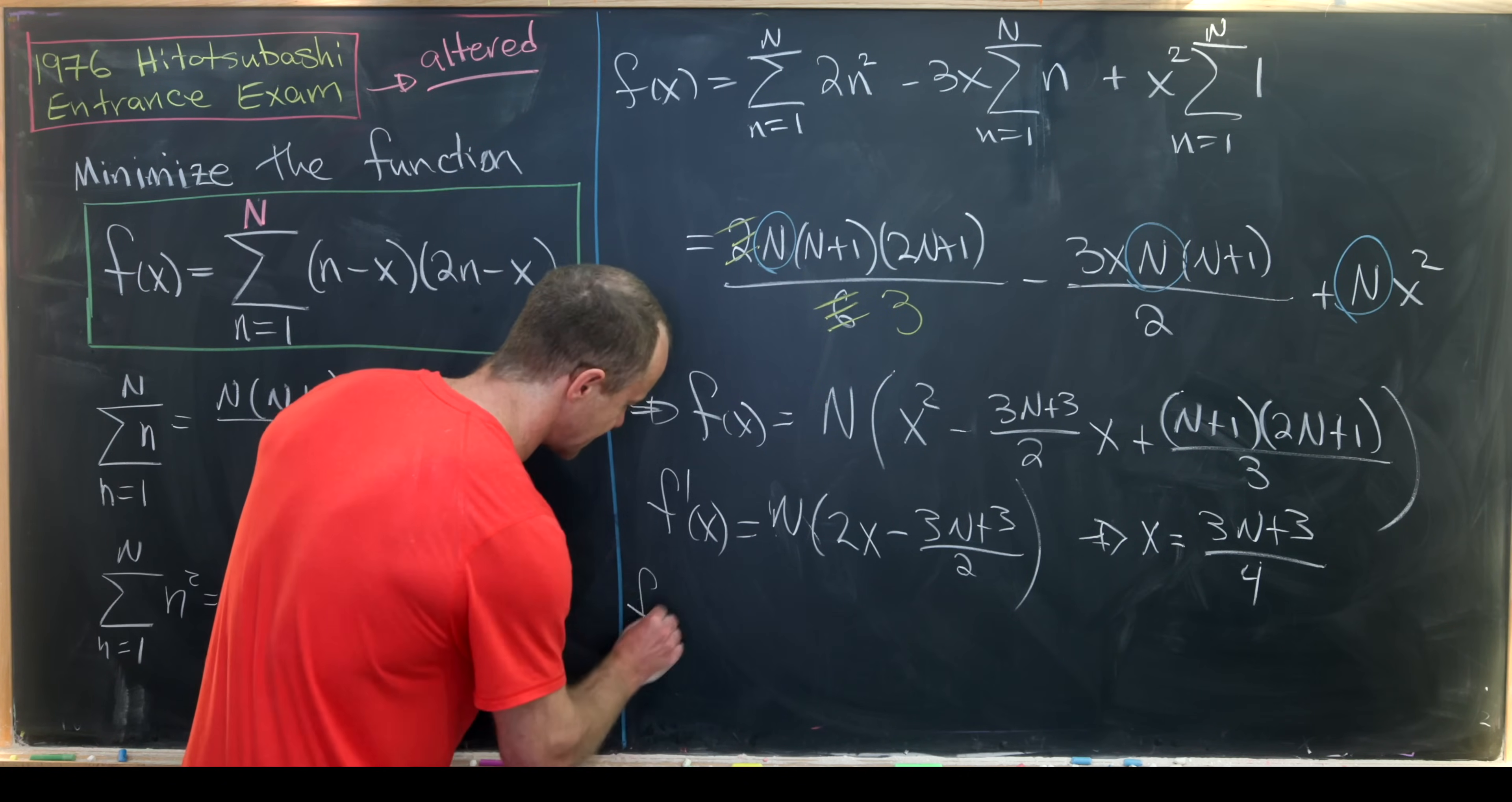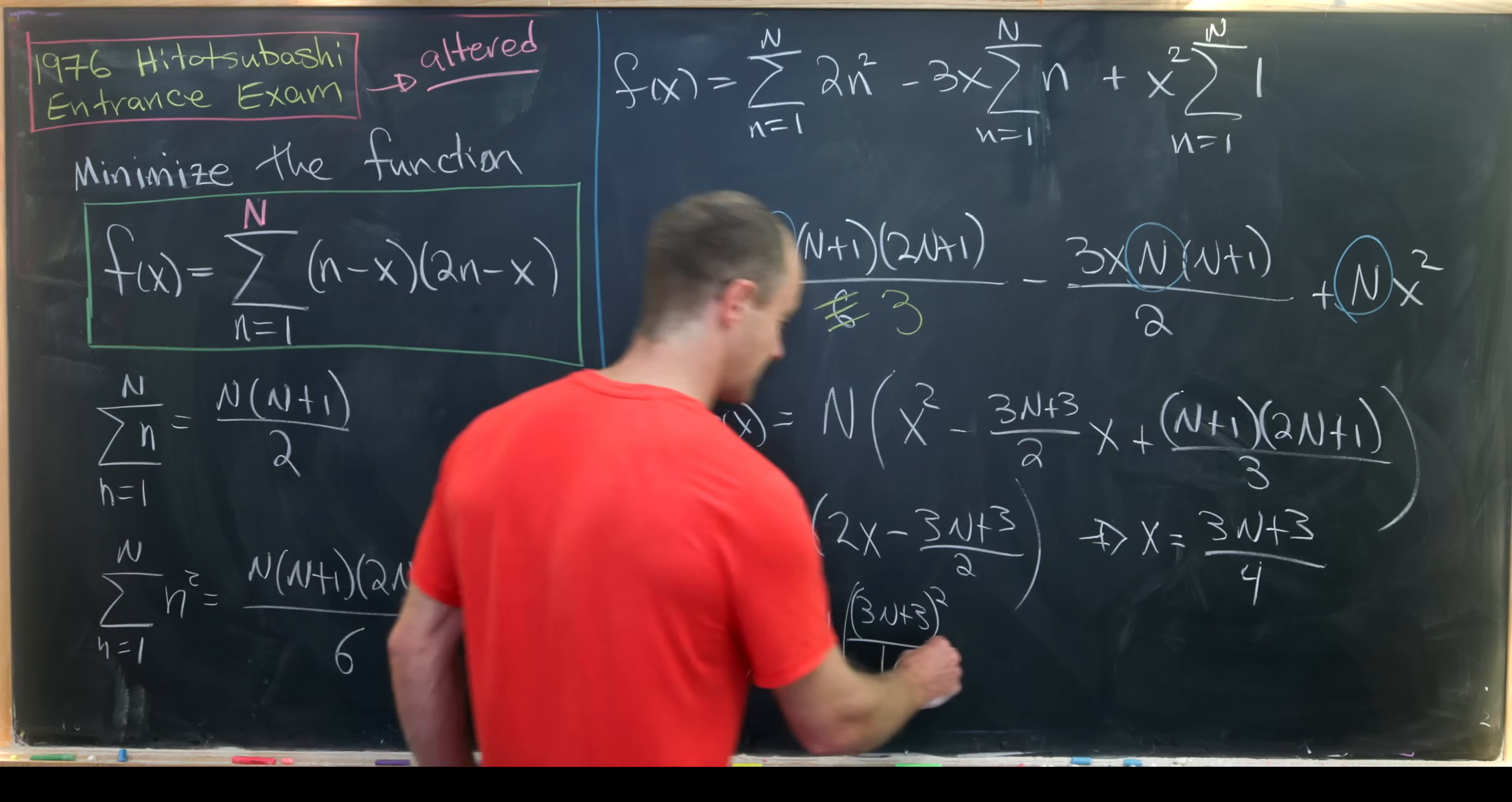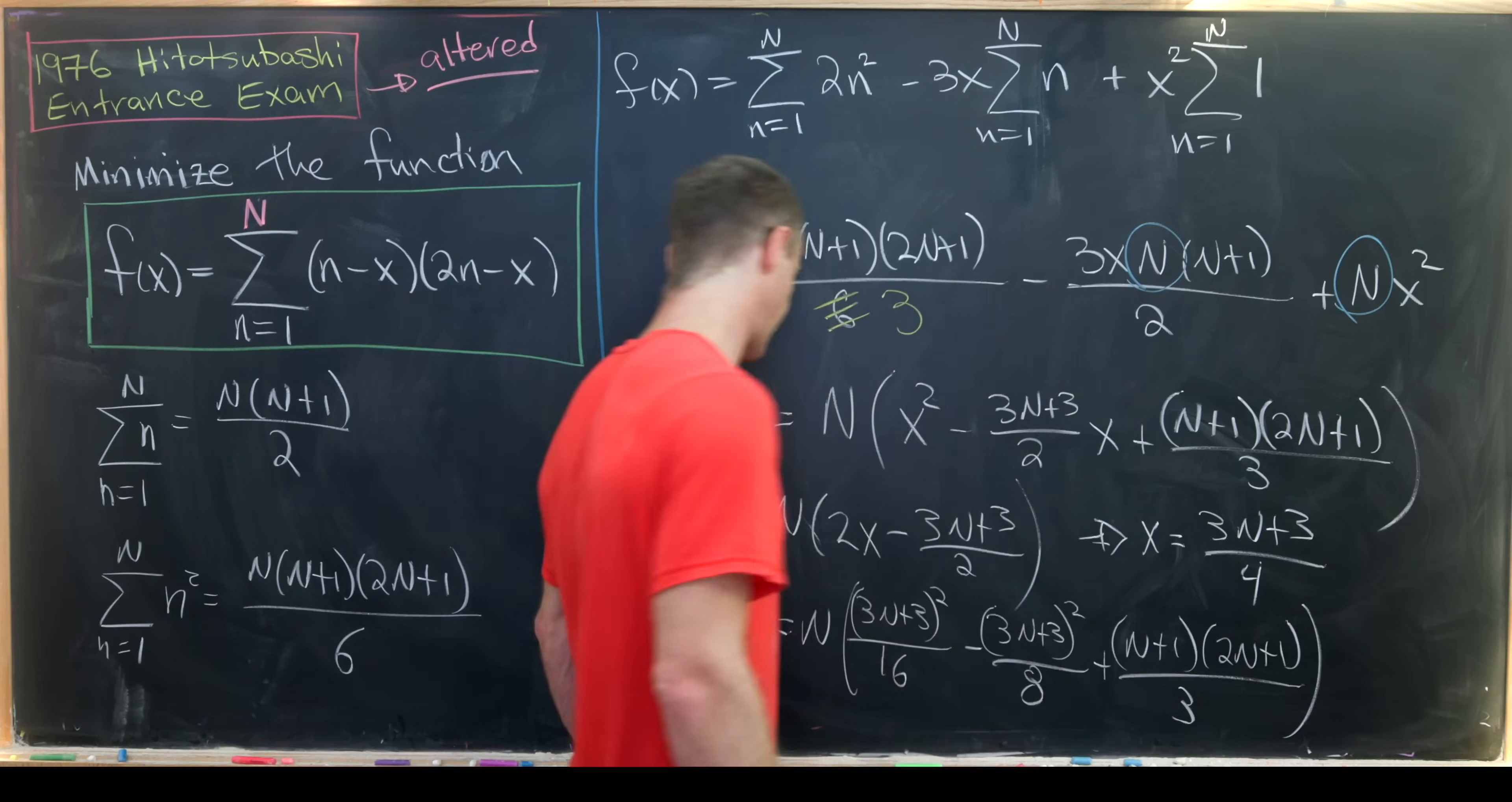So let's plug this in. So f of 3(N+1)/4 is going to give us N times (3(N+1))² over 16 minus 3N(N+1)/2 times (3(N+1))² over 8 and then finally plus (N+1)(2N+1)/3. That's our minimum value.